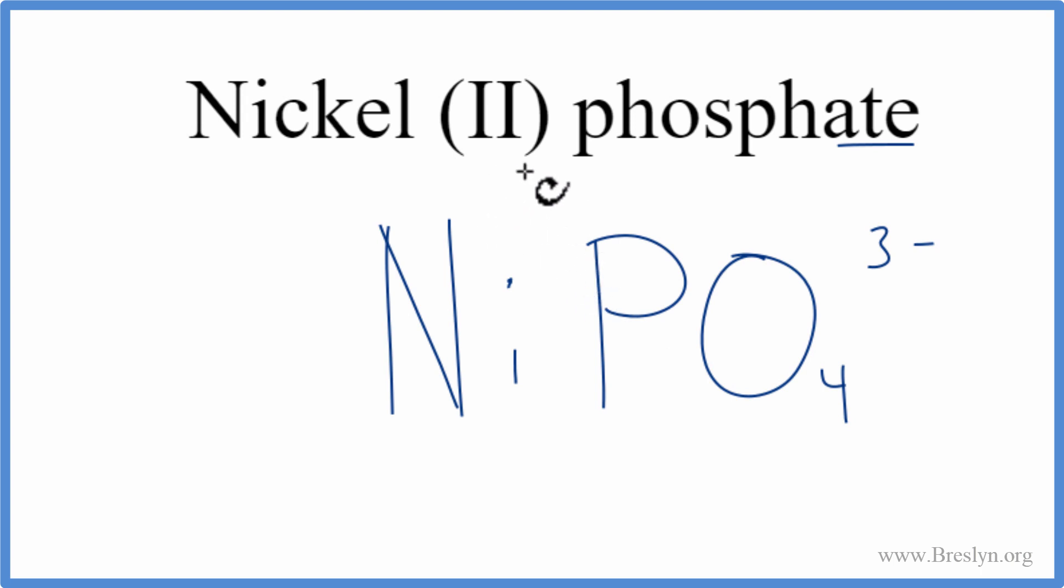With ionic compounds, we need to think about the charges on the nickel and then on the phosphate. We have some help here. Nickel, it says right here, two. That Roman numeral two means nickel's a two plus. That's its ionic charge. Phosphate, we said, was three minus.